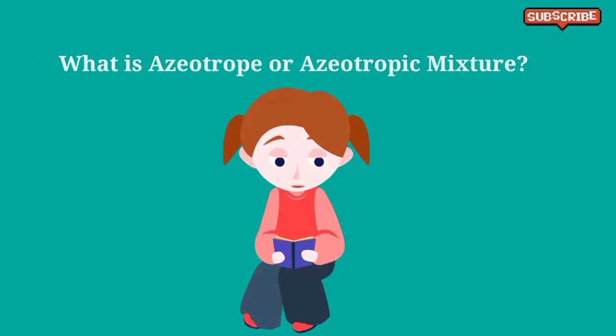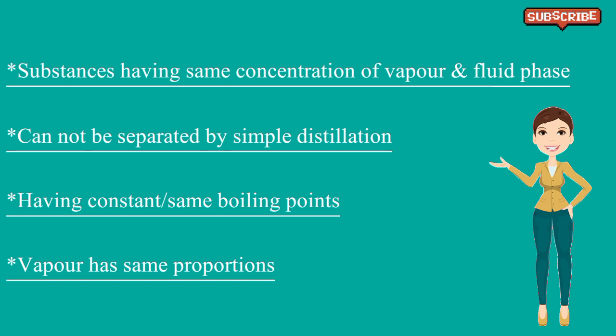What is an azeotrope or azeotropic mixture? An azeotrope or azeotropic mixture is a mixture of substances which has the same concentration of vapor and fluid phases, and cannot be separated by simple distillation. It is usually a mixture of two or more liquids. Azeotropic mixtures have a constant, same boiling point, and the vapor will also have the same proportion as the liquid. Hence, azeotropic distillation is used for separating azeotropes.